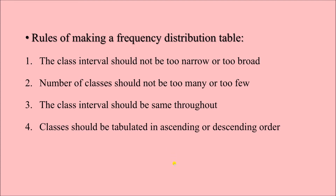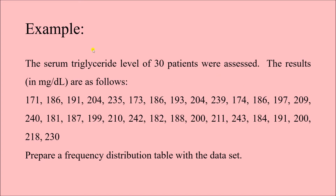What are the rules for making a frequency distribution table? The class interval should not be too narrow or too broad. The number of classes should not be too many or too few. The class interval should be the same throughout — if one class interval covers 10 years, the next should also cover 10 years, not 30. Classes should be tabulated in ascending or descending order. Here we have an example: the serum triglyceride level of 30 patients was assessed, with results in mg/dL.